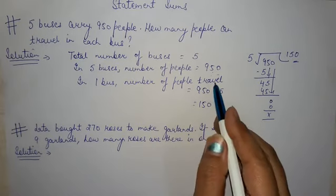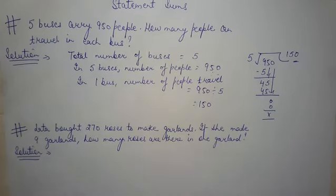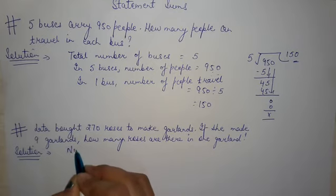Let us take one more example. Lata bought 270 roses to make garlands. If she made nine garlands, how many roses are there in one garland? So we'll be writing here: number of roses...